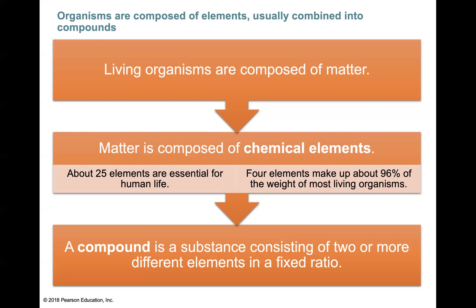Make a note of that. Of those 25 essential elements, about four make up about 96% of the weight of most living things. By the end of this lesson, I want you to have a great grasp on the four chemical elements that make up the majority of the mass of living things. These chemical elements are typically going to exist as a compound, which we define as a substance that consists of two or more different elements in a fixed ratio. Many of the things that help us continue to exist are basically the product of these compounds. We'll look at how chemical elements form compounds and talk about chemical bonds — the forces of attraction that hold these elements together.